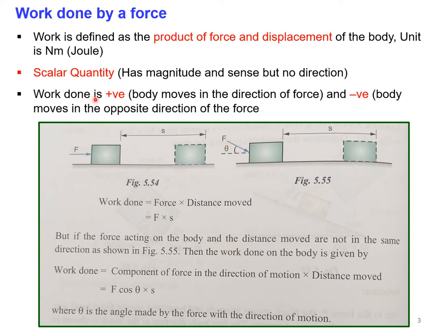Let us start with the definition of work. If you have a force F acting on a body, the body will move in the direction of the application of the force and has moved by distance S. Work is defined as the product of force and displacement of the body. For this case, the work done can be calculated as force into distance moved, so work done equals F times S.